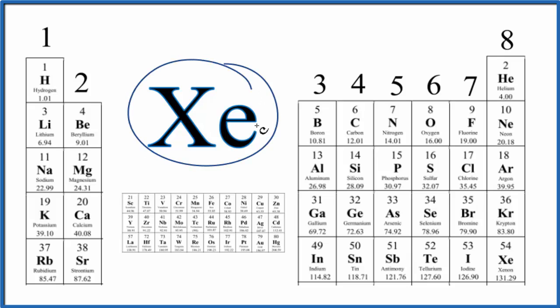So if we can find xenon on the periodic table we can figure out the valence electrons. Xenon is right here. It's in group 18, sometimes called 8a. And xenon therefore has 8 valence electrons.